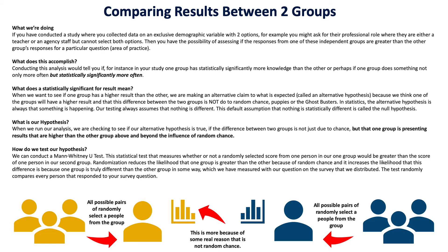Then it pairs that person with the next person and asks: is your score higher or is the next person's higher? What happens is you have the number of responses from one group versus the other group, and the test will say: Group A had more responses for the highest score option.